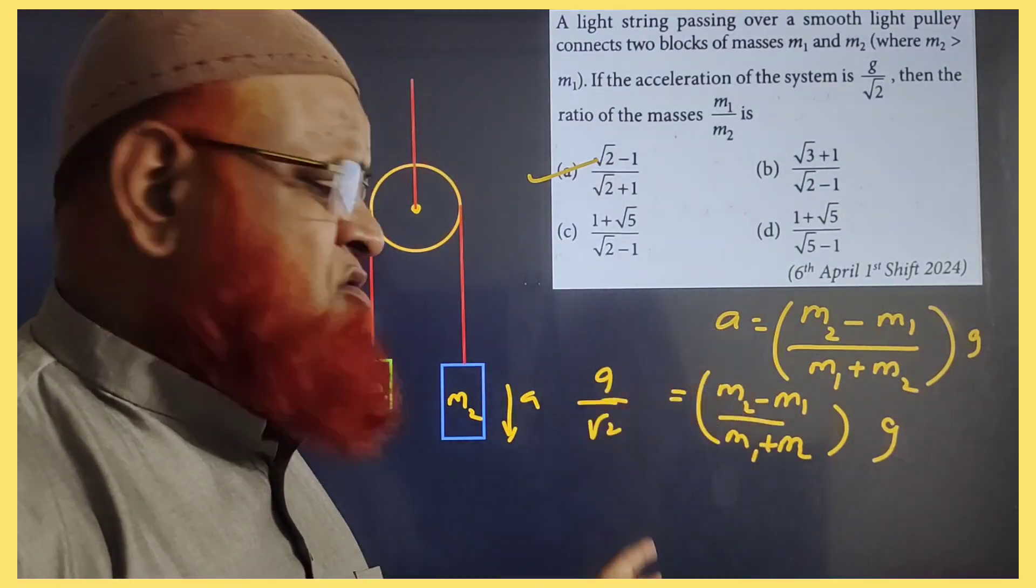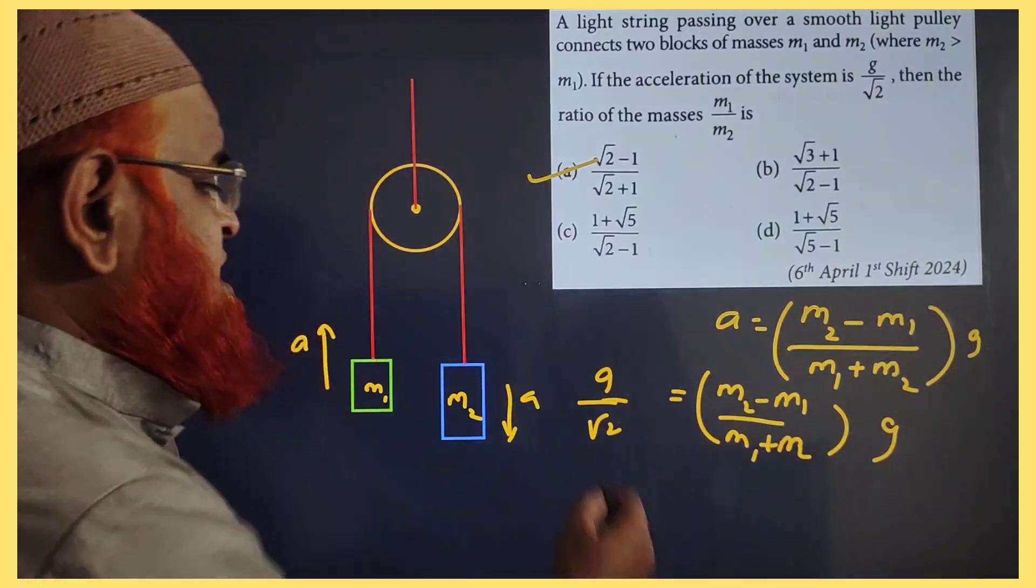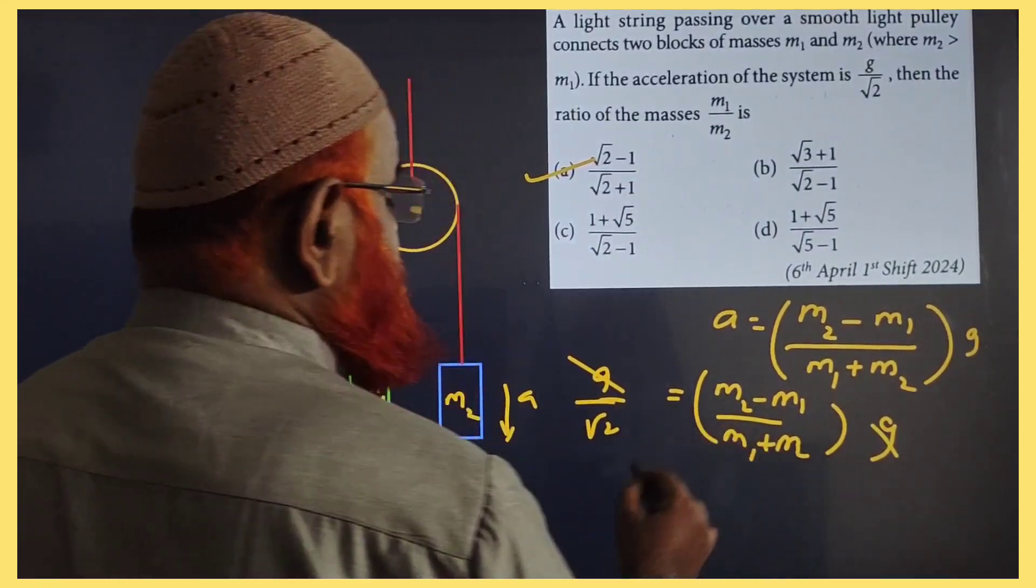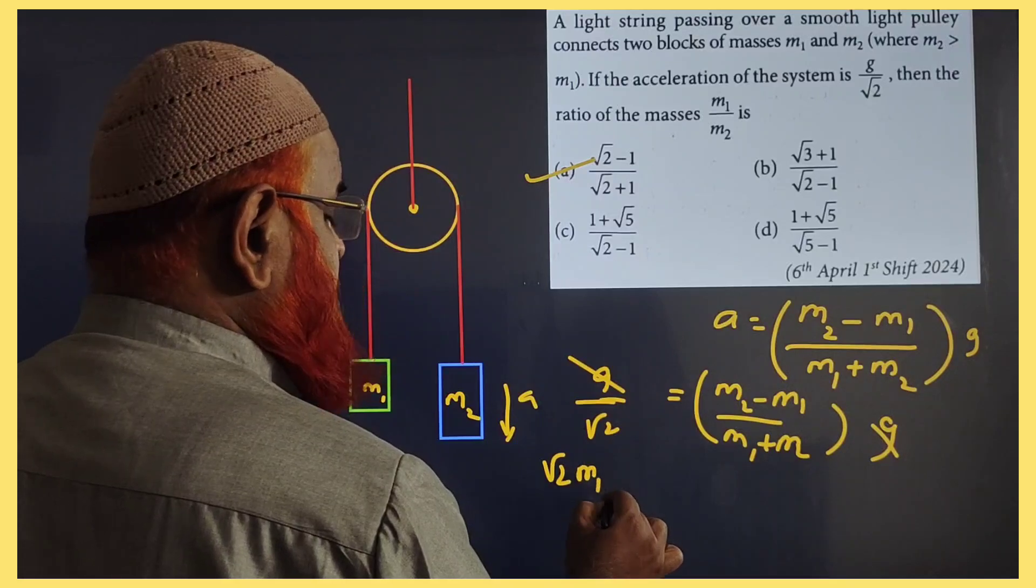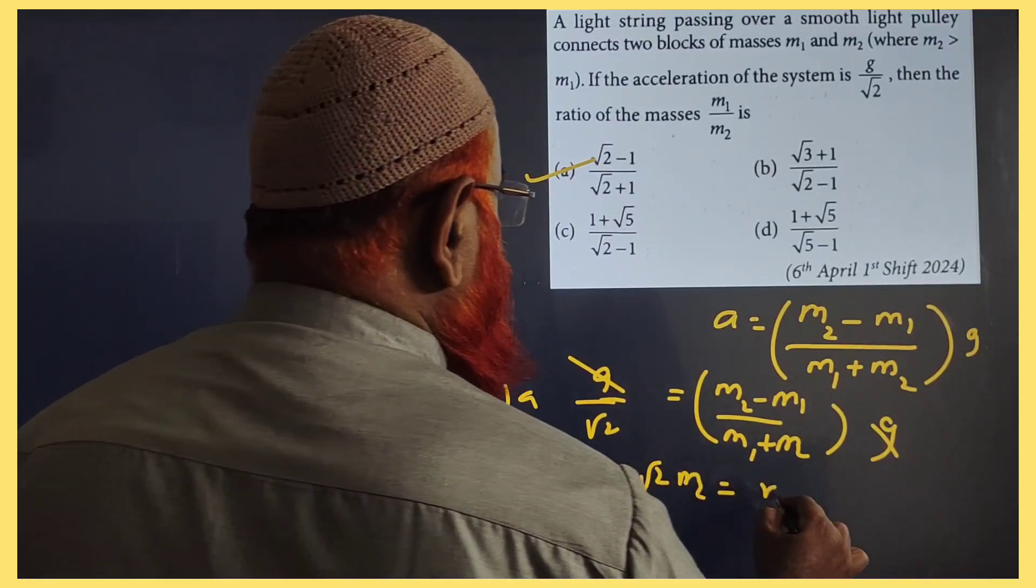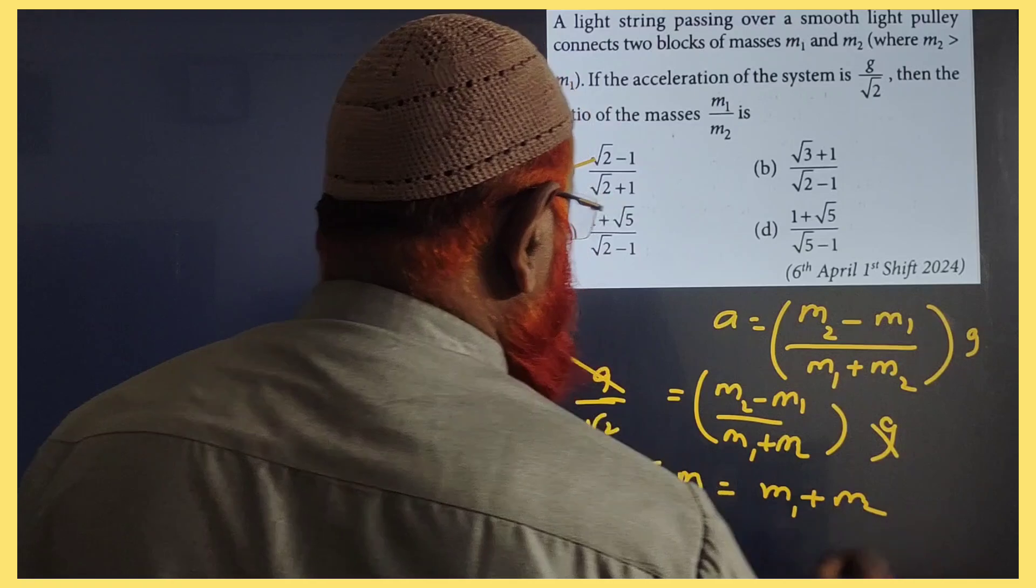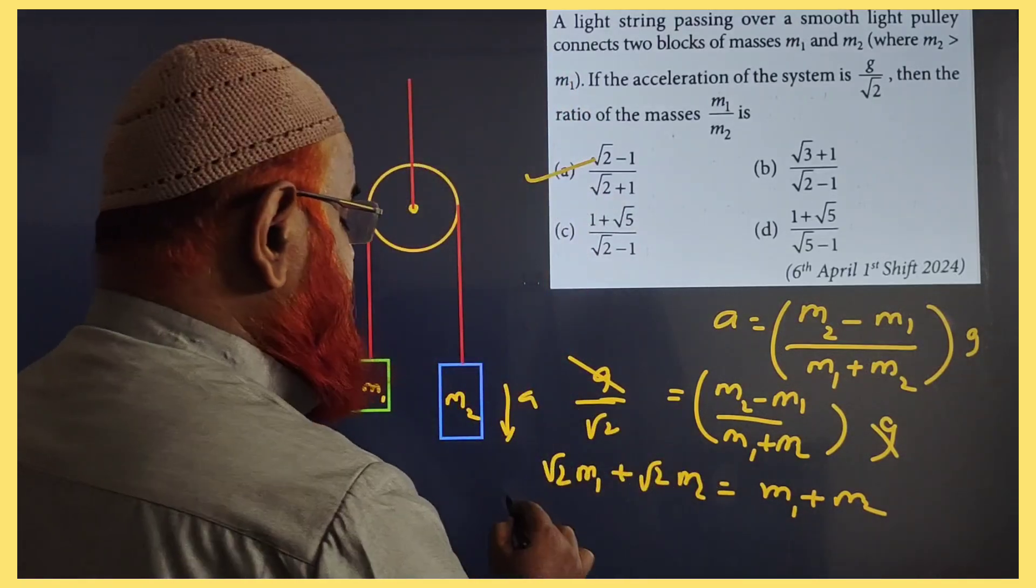Just in the place of acceleration, you write G by root 2, that's it. So G gets cancelled, you can cross multiply, you have 2. That is root 2 M1 plus root 2 M2. It is nothing but M1 plus M2. So take M1 to this side.